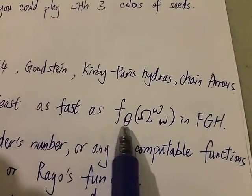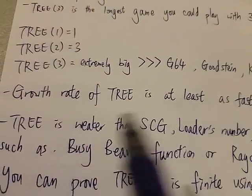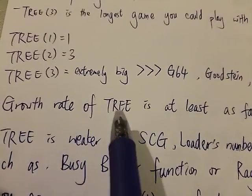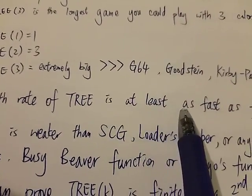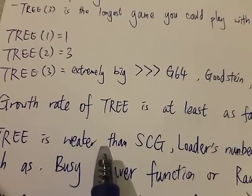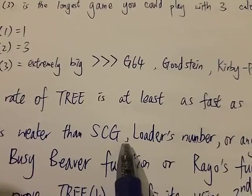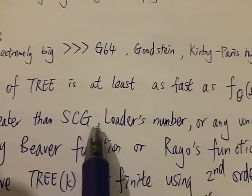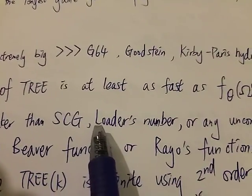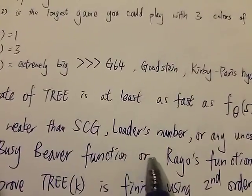I'm not going to explain what this is. This is just a very fast-growing function. However although the tree sequence grows very fast, of course it's not the fastest function ever. It is actually weaker than the subcubic graph function, the SCG. It is also smaller than the loaders number or any uncomputable functions such as the busy beaver function or the rayo's function.